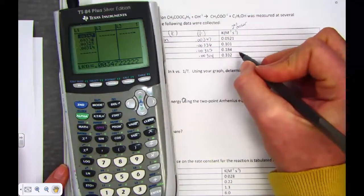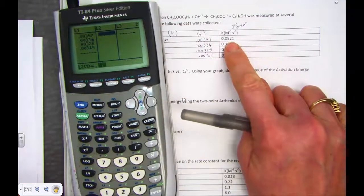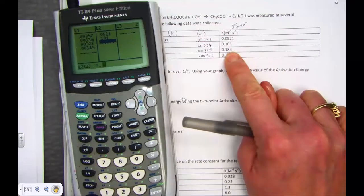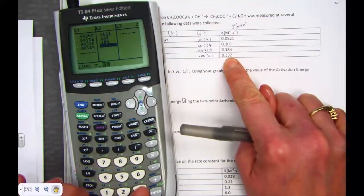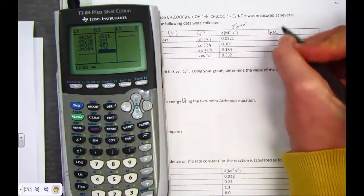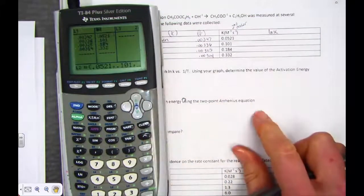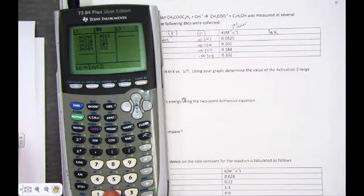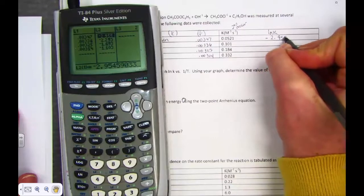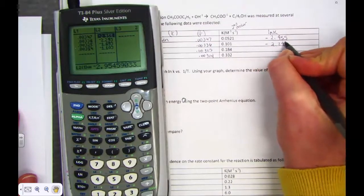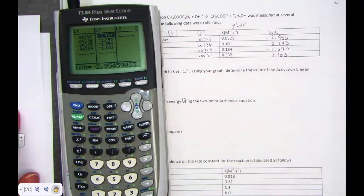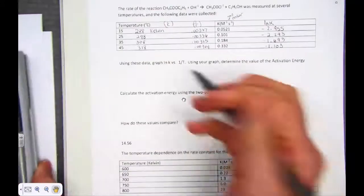List two, we have K constants given to us. So let's type into list two as written the Ks: 0.0521, 0.101, 0.184, 0.332. But I also know that when I plot, I need it to be the natural log of Ks. So make your calculator do that work. Place your cursor up on L2, and just take the natural log of list two, and it will flip it for you. So I have negative 2.955, negative 2.293, negative 1.693, negative 1.103. We have the two lists we need to graph.